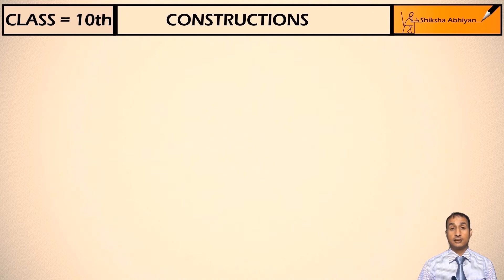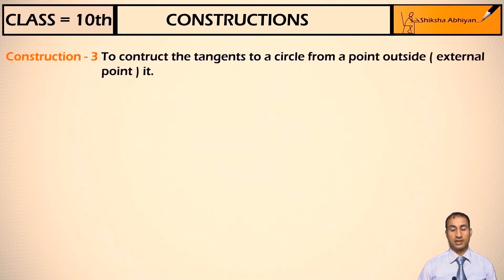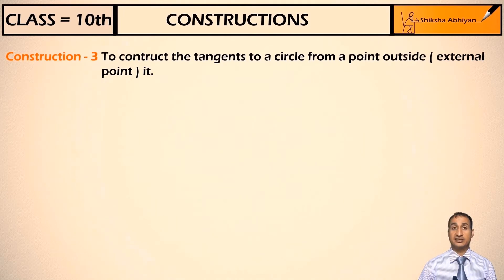Now students, see the third and the last construction of this chapter. Construction three is to construct the tangents to a circle from a point outside it, that is an external point.